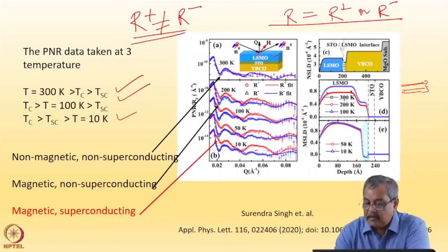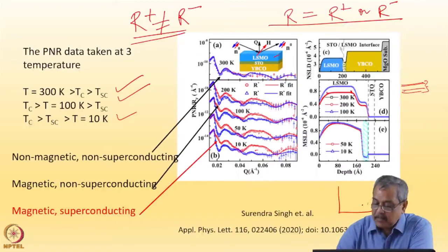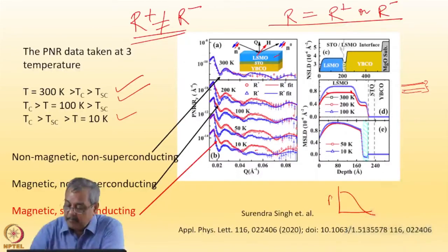The data, 300 K non-magnetic, 100 K magnetic. When we went to 100 K, the magnetization density increases, exactly matching with what I showed you, the B versus T plot.